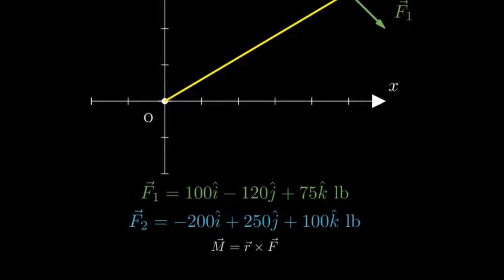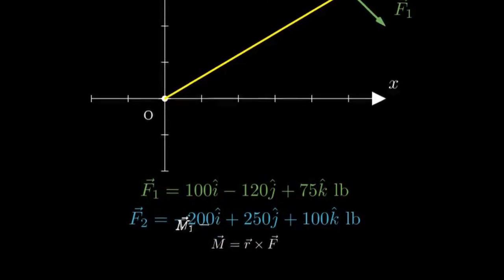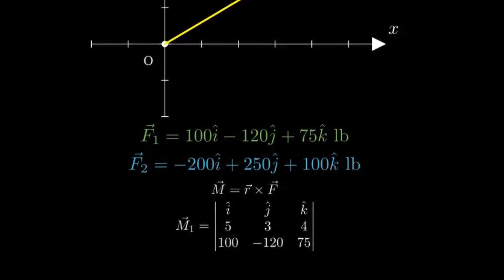Let's calculate the moment due to F1 first. We can write this as a determinant: i, j, k in the first row, 5, 3, 4 for our position vector components in the second row, and 100, negative 120, 75 for F1's components in the third row.